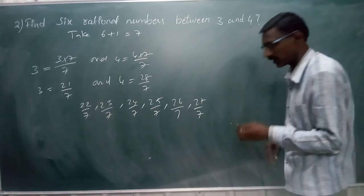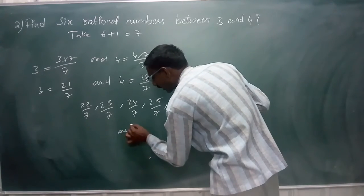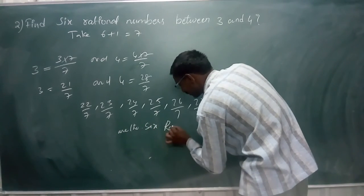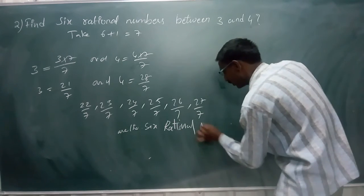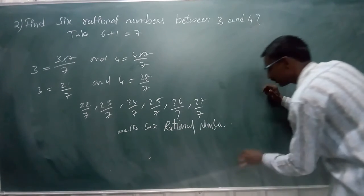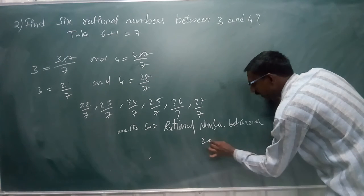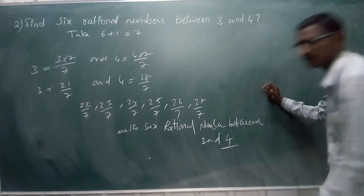These are the 6 rational numbers between 3 and 4. That's all. Is it clear?